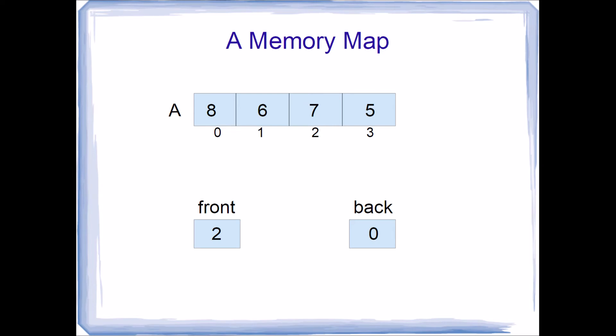Why does this wraparound work? We dequeued 8 and 6, so the front of our queue is in element 2, which leaves elements 0 and 1 available to be reused. After wrapping back around and resetting back to 0, the next place we write a value will be in the first element. The front of the queue is still in element 2. Our queue contains 7 and 5, but we're storing it in a wraparound fashion — differently from how we think about it in the abstract.